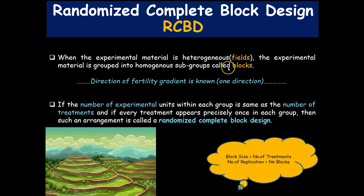Whenever the experimental material is heterogeneous, it is grouped or partitioned into homogeneous subgroups, which are known as blocks. This design implements a very important principle of experimental design called local control, which is not used in CRD. In CRD we have uniform or homogeneous experimental material, but in RCBD we are dealing with heterogeneous material, which is why local control is needed.